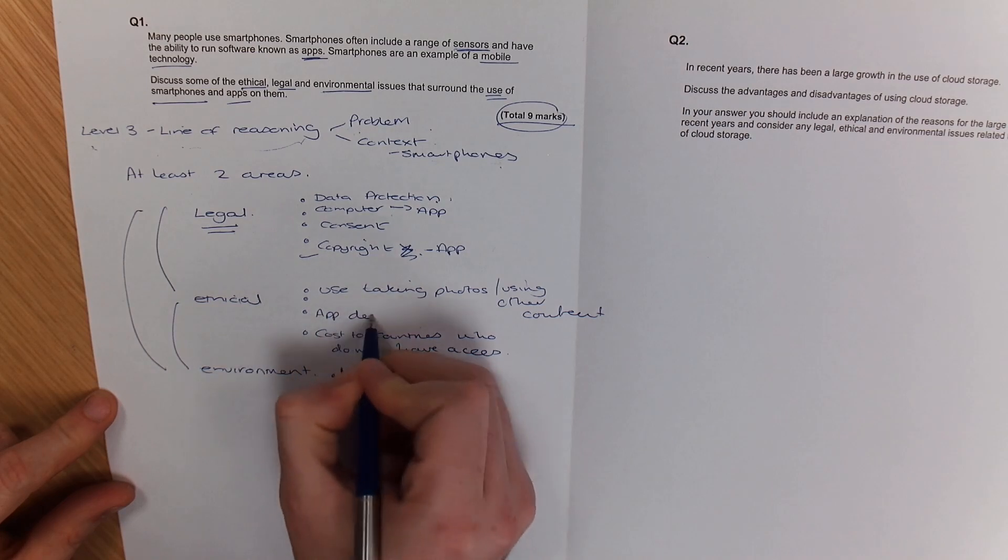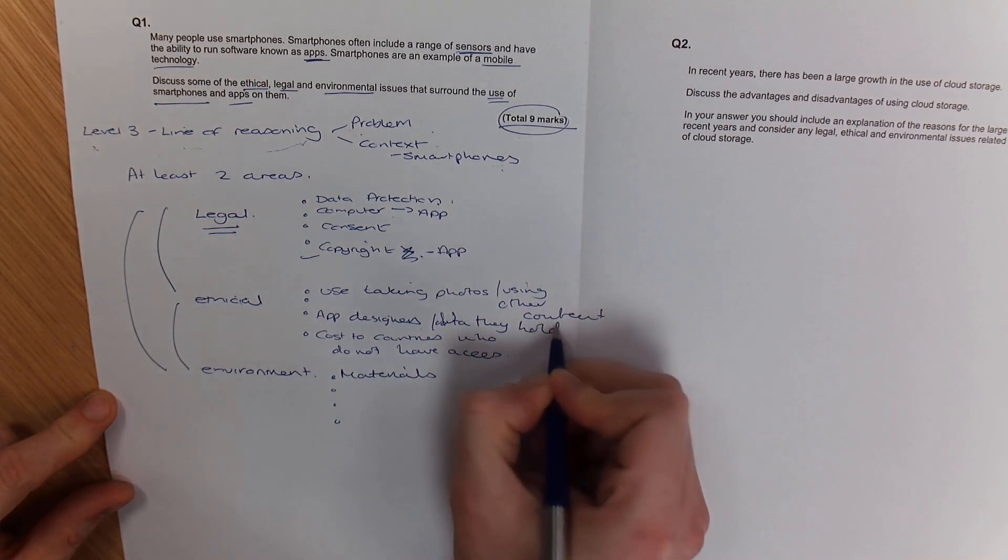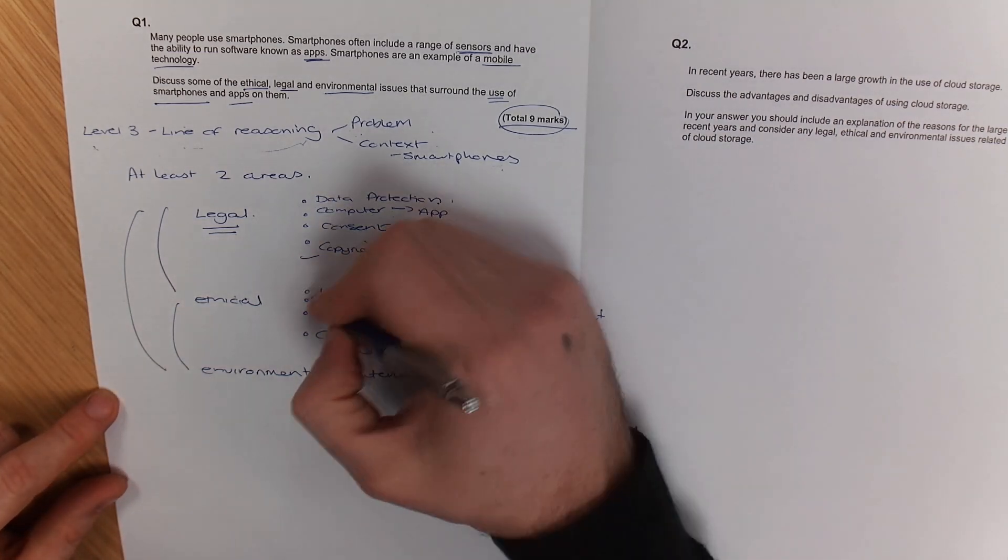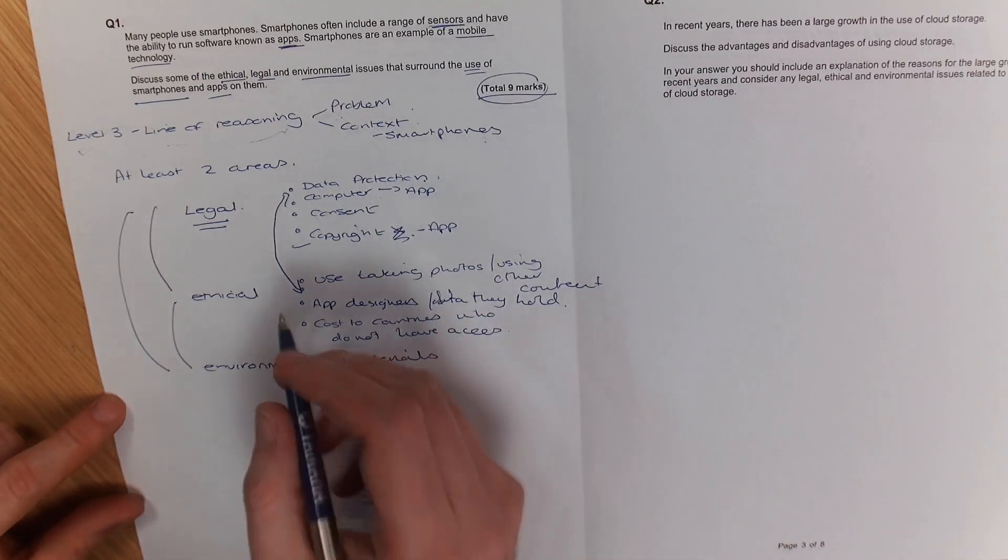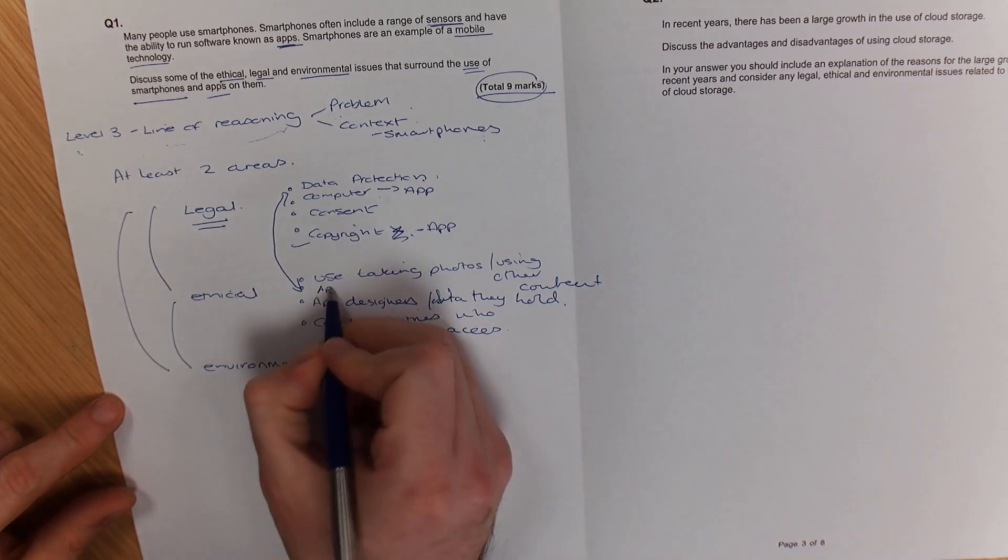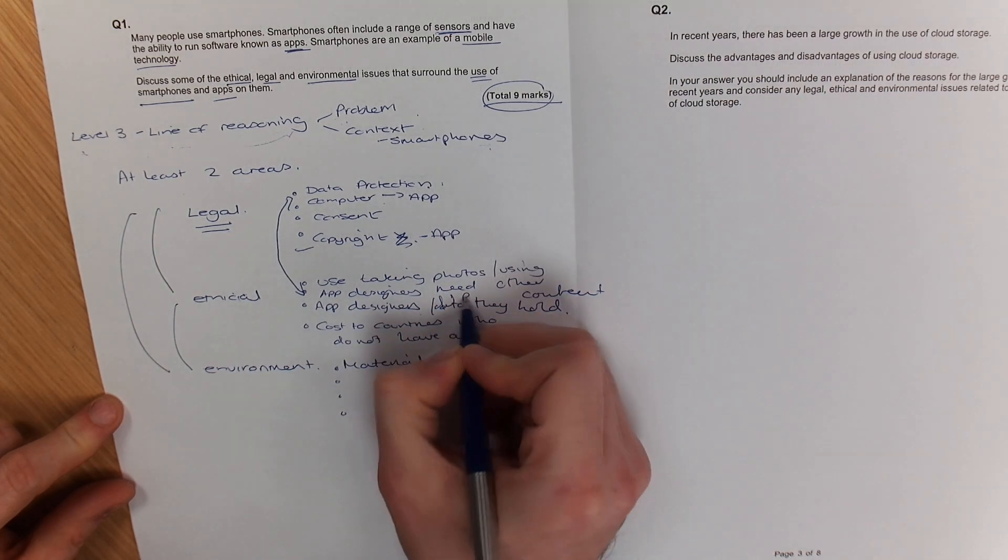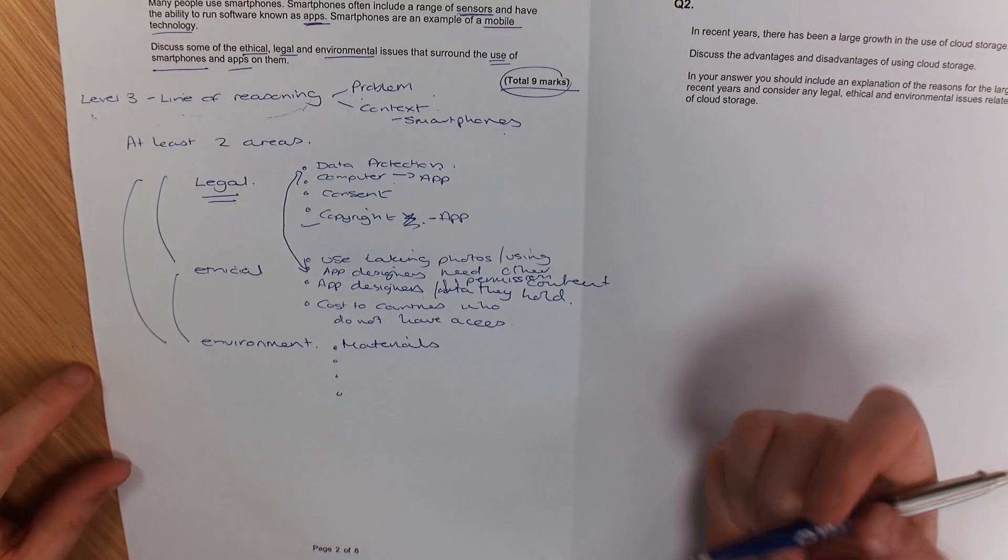So you are gathering the data. App designers and the data they hold on people. Data they hold. We can also say that they need to be aware of what... This kind of links into legal, into the Data Protection Act. So just be aware of that. That the app designers, if they want to use your data for something, they need to actually, so the app designers need permission to use your data.